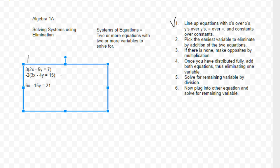So it's going to be 6x minus 15y equals 21. That's the first equation. The bottom one is going to be negative 6x plus 8y equals negative 30. So that makes your job a whole lot easier.